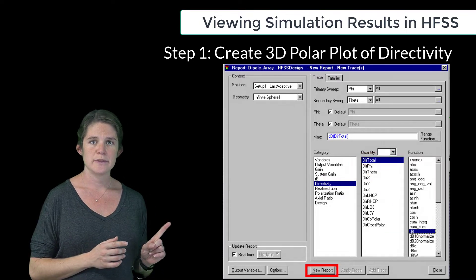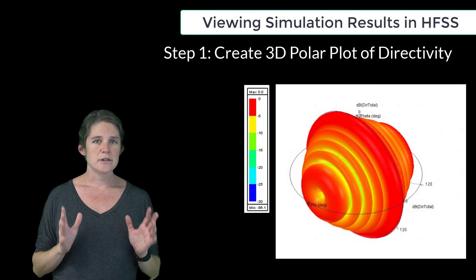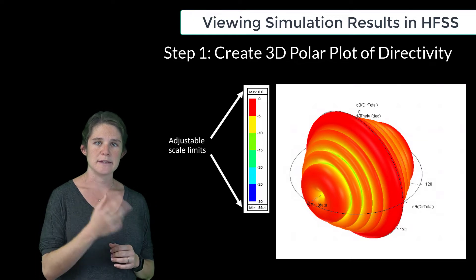Click New Report. This will result in a 3D plot of the directivity. Notice that you can change the plot limits of any plot by double-clicking on the scale.